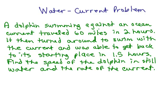Now if you look at the first sentence, you might notice that the dolphin went 60 miles in 2 hours. So against the current, the dolphin was going 30 miles per hour because you just do distance divided by rate,